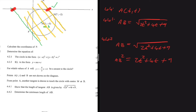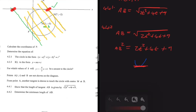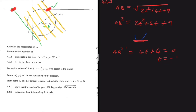Differentiating AB squared equals 2T squared plus 4T plus 9 gives 4T plus 4 equals 0, so T equals minus 1. We can also confirm using the vertex formula: T equals minus b over 2a equals minus 4 over (2 times 2) equals minus 1. So the length AB is at a minimum when T equals minus 1.